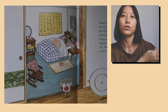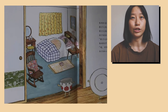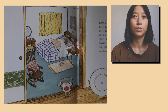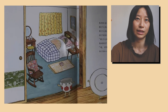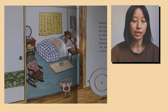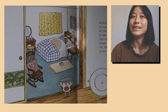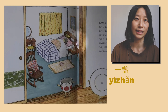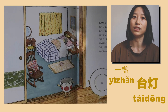這張桌子也是棕色的，也是木頭的。桌子上面有一個，或者一盞台燈。 (This table is also brown, also made of wood. On top of the table there is a lamp, or one lamp.)